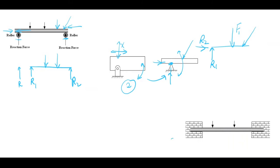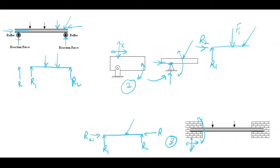The third type of support is the fixed or built-in support. This type does not allow any movement — it resists axial movement, transverse movement, and also the rotation of the beam. In the line diagram we will have reaction forces R1 and R2. If there is an inclined force, it will offer an axial reaction at the support point and also a resistive moment.